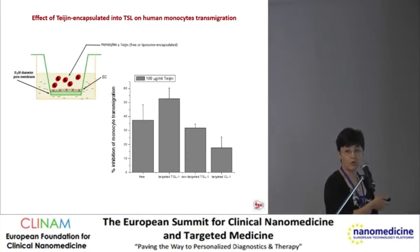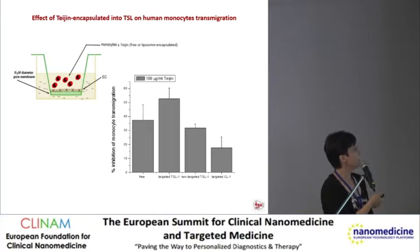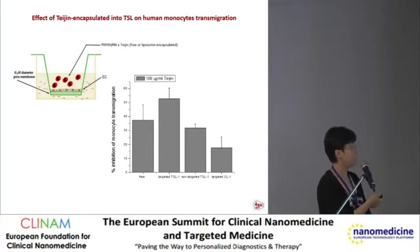We studied the functional role of the CCR2 antagonist delivered by TSL on human monocyte transmigration using a Boyden chamber. Activated endothelial cells were captured on the filter and incubated with monocytes in the presence or absence of free antagonist or liposome-encapsulated antagonist. Targeted TSL demonstrated the maximum inhibitory effect on monocyte transmigration compared to free antagonist or other liposome types — non-targeted or targeted non-sensitive liposomes.